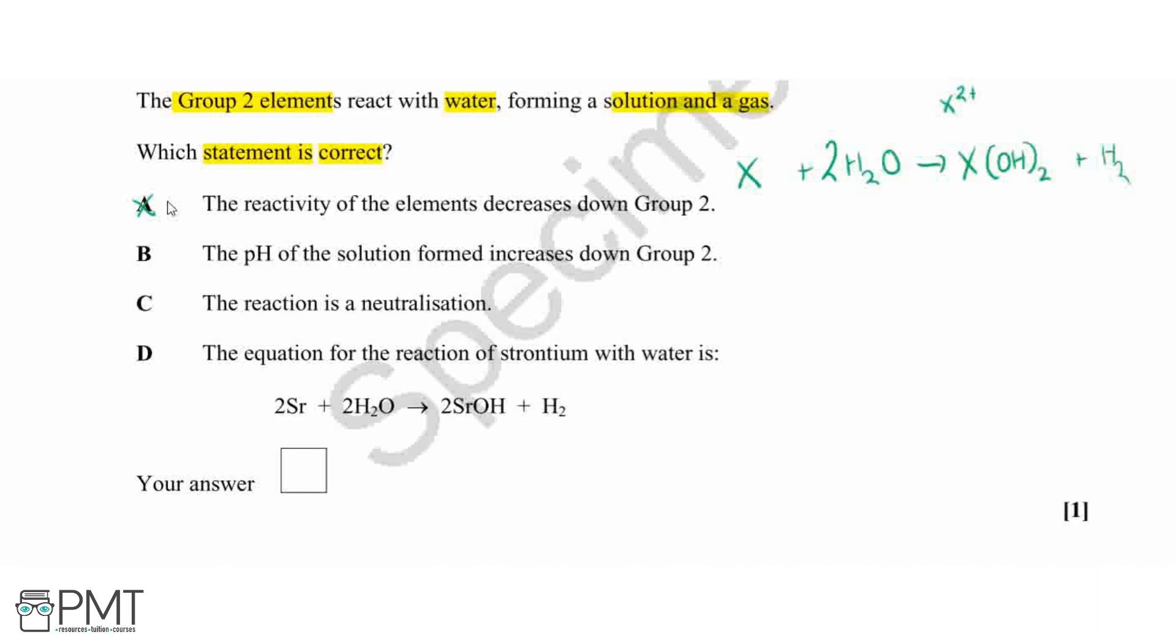Therefore it's going to be easier to remove the electrons from an element as we go down that group 2, hence they're going to be increased in reactivity, and this is despite the increasing nuclear charge. So overall our reactivity will actually increase, hence statement A is incorrect.